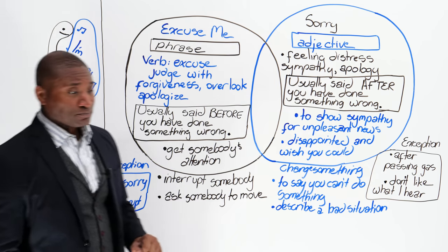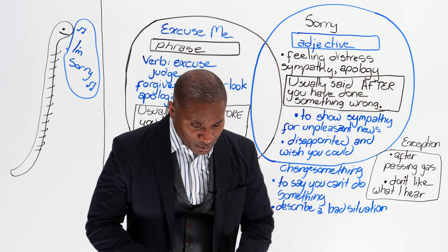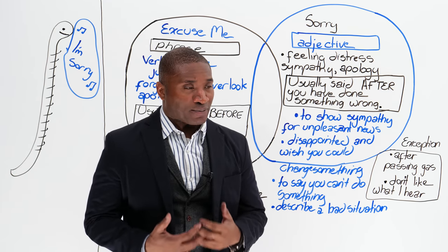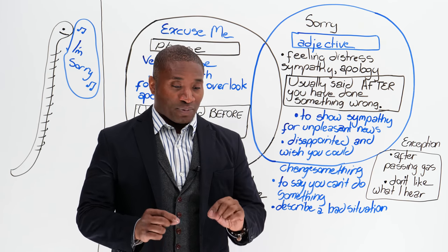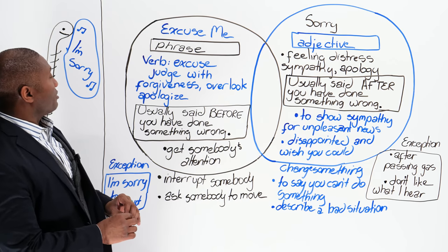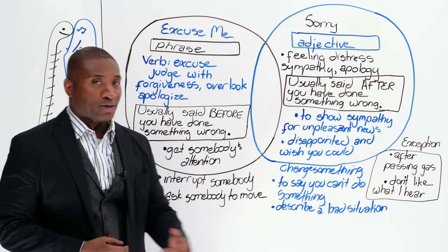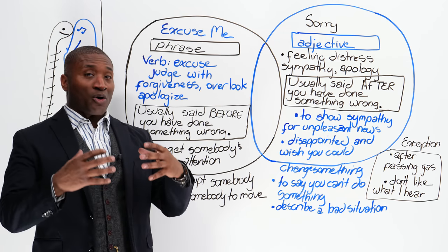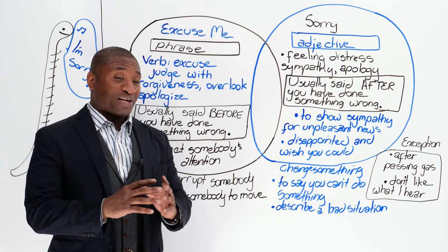Interrupt somebody. Imagine I'm working at my desk and you need my attention. Going back to attention, but I'm actually working. You might say, excuse me, because you're interrupting me. I'm apologizing for interrupting you during your work. It's very polite, because in saying that, it says I'm acknowledging that you're working and I respect that, but I need your attention.